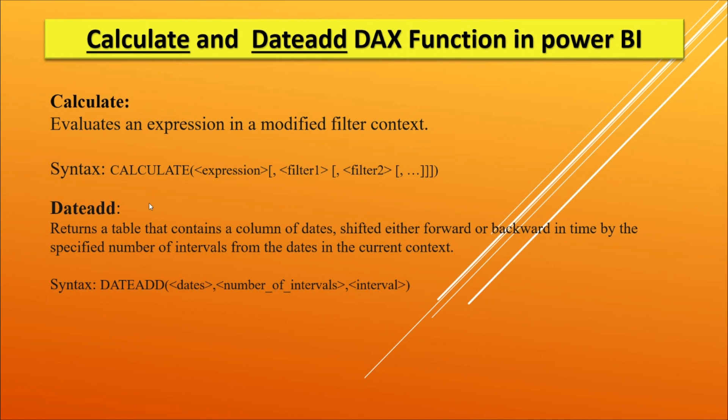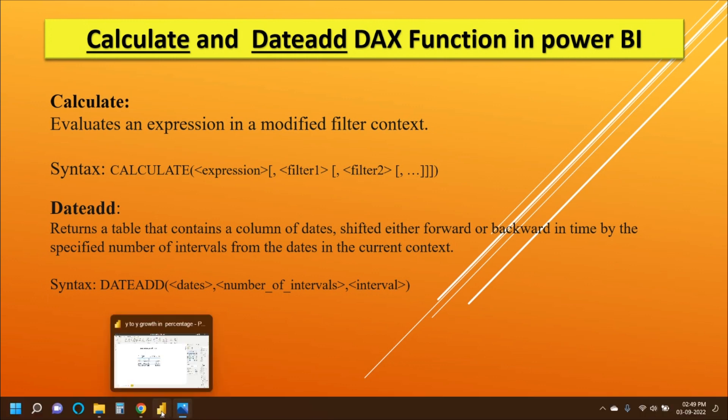The syntax of the DATEADD function is: DATEADD, then we pass a date column from our data, then we specify the number of intervals — for example, if we want three months back, we specify minus three and then the 'month' argument. If we want the previous three days, we specify three and then 'day'. That's how we use this DATEADD function.